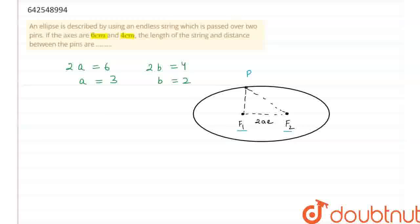Now let's write the equation of the ellipse that would be x square upon a square plus y square upon b square is equal to 1.